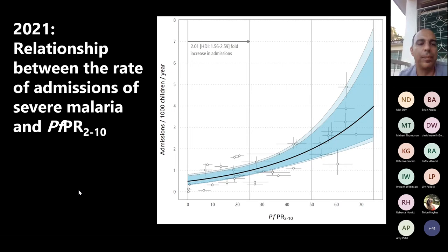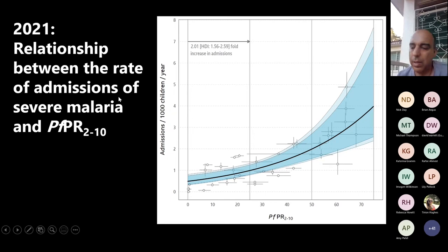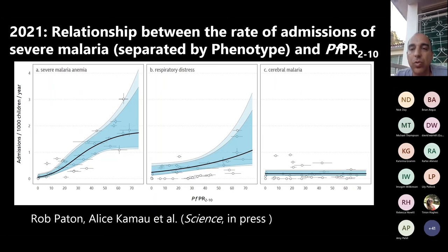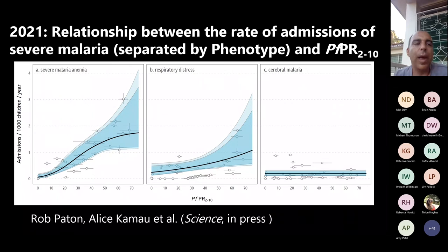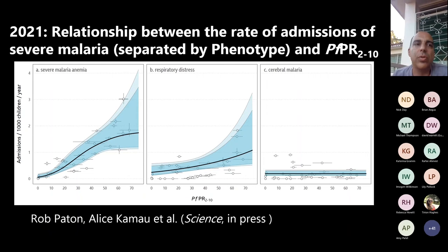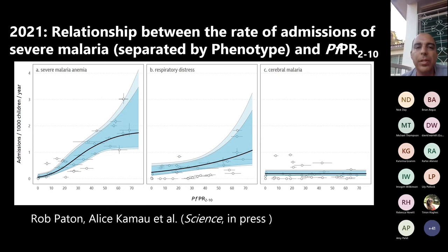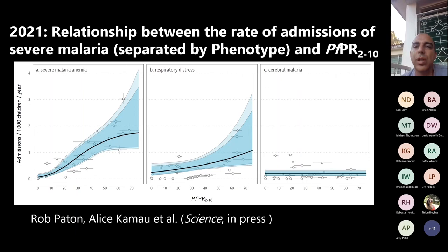Breaking that relationship down by severe malaria type — respiratory distress and cerebral malaria — what I said holds true for severe anemia and respiratory distress. For cerebral malaria it's harder to know, because it's actually a very rare outcome. It was extremely noticeable in the early days because it's such a dramatic presentation, and there was probably quite a lot of misdiagnosis of severe anemia as well. But when measured carefully, although cerebral malaria is dramatic and those children need treatment, it doesn't drive the overall epidemiology of malaria.